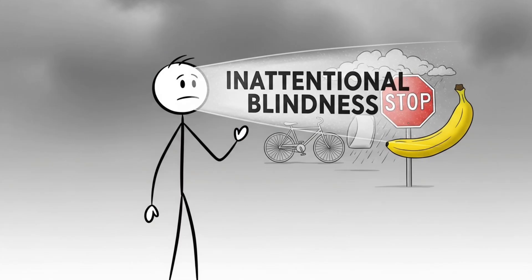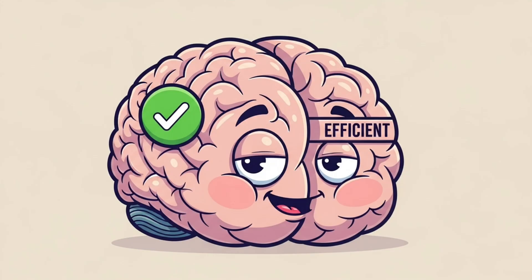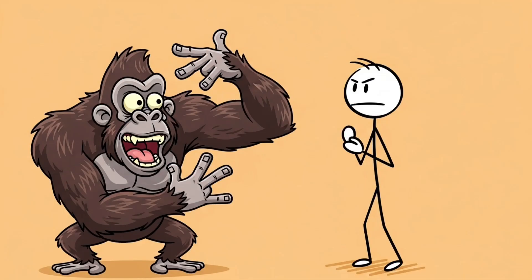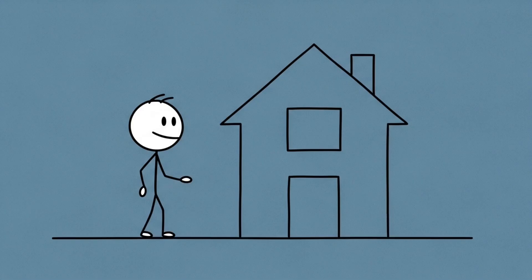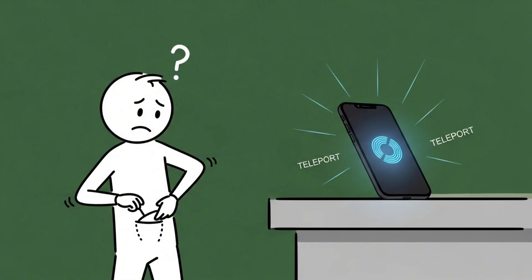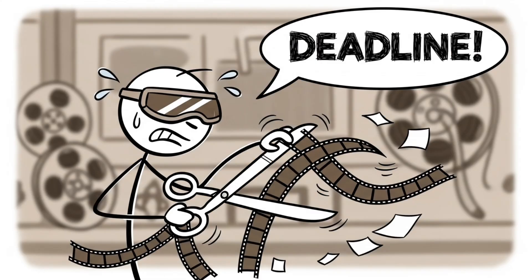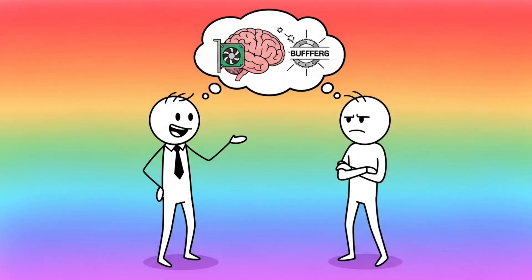This is called inattentional blindness. Your brain filters out irrelevant data so it can focus on what it thinks matters. In theory, this is efficient. In practice, it means you could literally ignore a gorilla doing jazz hands three feet away. You experience this glitch all the time — missing details, forgetting names, not noticing when your phone teleports from your pocket to the counter. Your brain edits your world in real time, deleting everything it considers unnecessary. Basically, your perception isn't a camera — it's a lazy editor cutting corners to meet a deadline. So next time someone accuses you of not paying attention, just tell them your brain's graphics card was buffering.